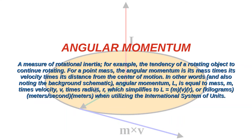The measure of rotational inertia — for example, the tendency of a rotating object to continue rotating. For a point mass, the angular momentum is its mass times its velocity times its distance from the center of motion.